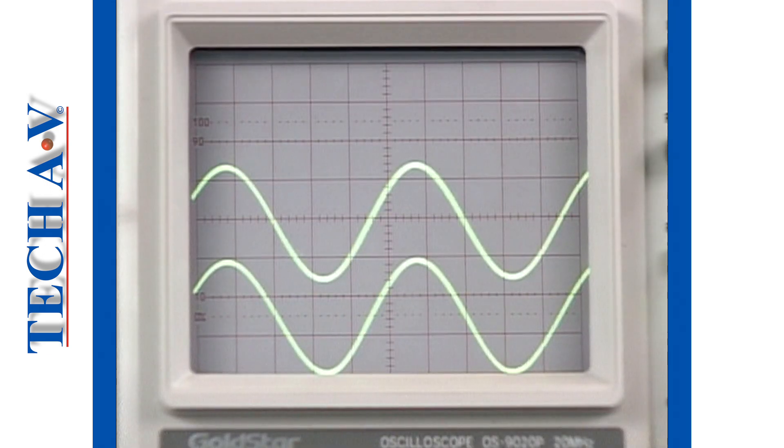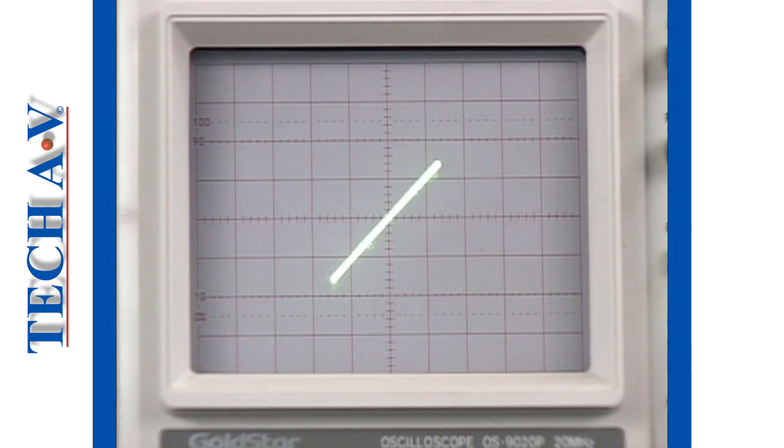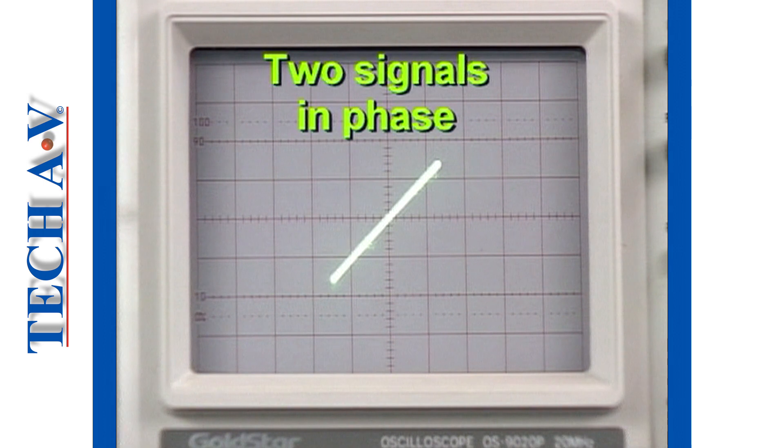Applying two sine wave signals of identical frequency to both input channels causes the beam to trace out a diagonal line at exactly 45 degrees, which indicates that the two signals are exactly in phase.